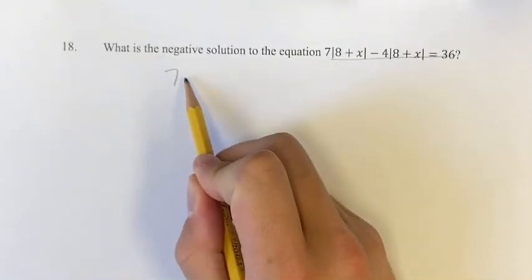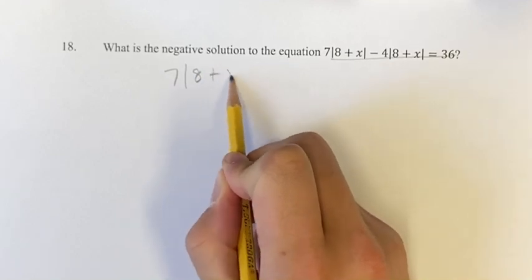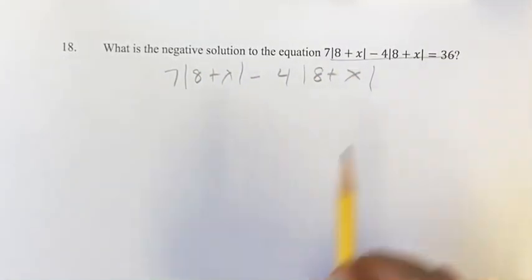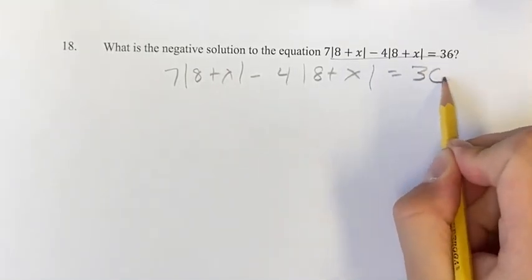So what we have here, if we write this down, we have 7 times the absolute value of 8 plus x minus 4 times the absolute value of 8 plus x. That's all going to be equal to 36.